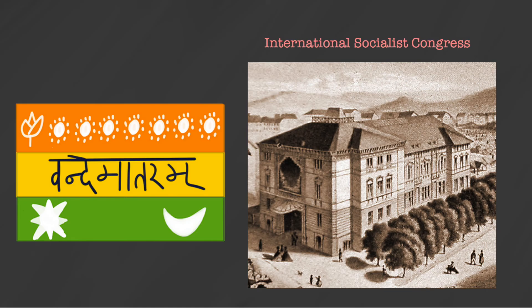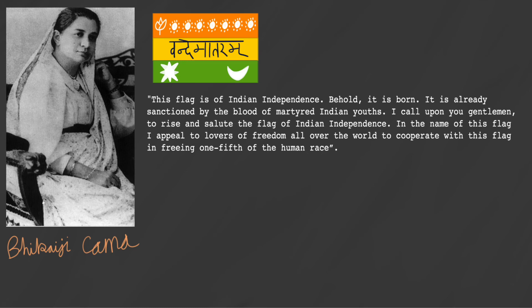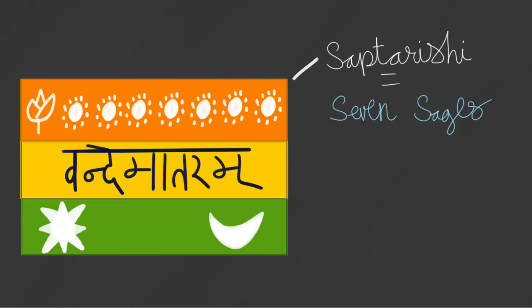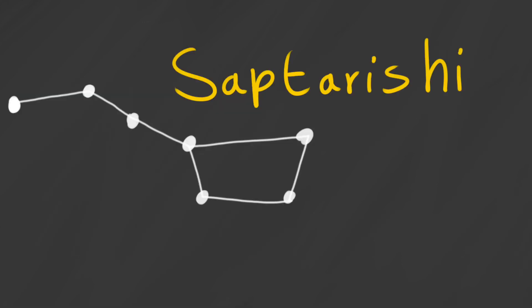India's next flag was hoisted in 1907 and was similar to the previous one, but its significance is that it was hoisted all the way in Stuttgart, Germany, at the 1907 International Socialist Congress. It was presented by Madam Bhikaiji Cama, an Indian freedom fighter and women's rights activist, who also gave a speech about it. This flag was also known as the Saptarishi, or Seven Sages, flag because of the seven stars on the top stripe — Saptarishi is also the Sanskrit name for the Big Dipper, part of the Ursa Major constellation.